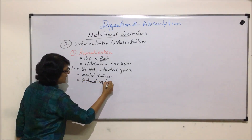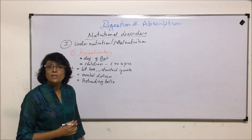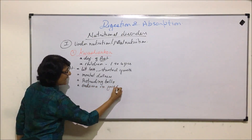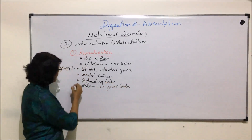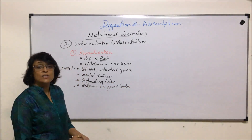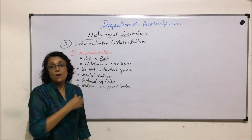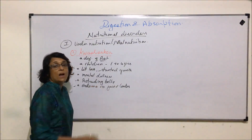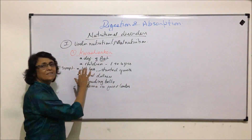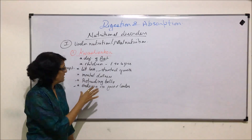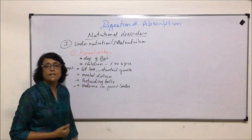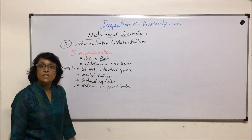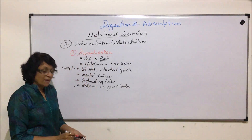The abdominal region is bulging, and there is edema on the face and limbs. So these are two characteristic features: they are extremely thin, but the belly or stomach region is protruding and bulging, and they have edema on face and limbs. Otherwise they are very thin and very dull, and the appearance itself gives a hint that this is due to protein deficiency.